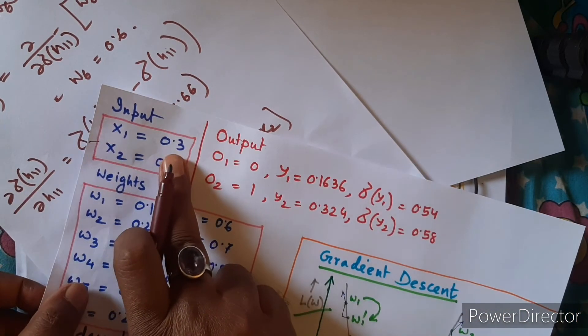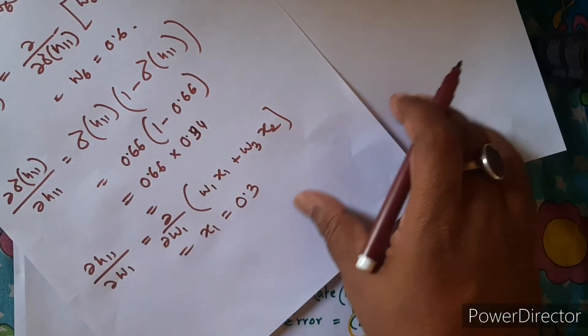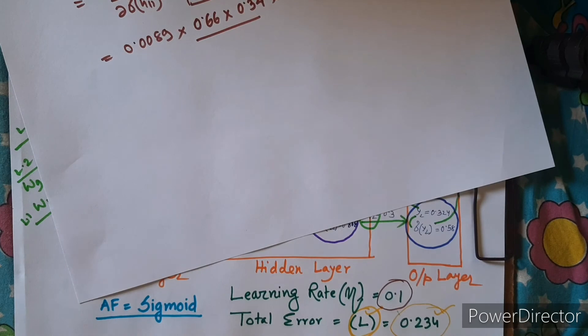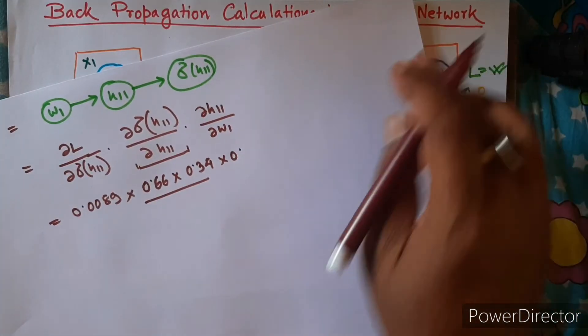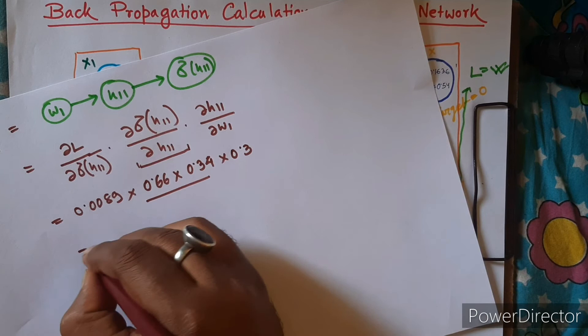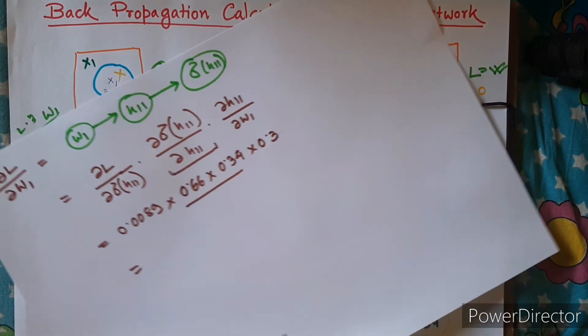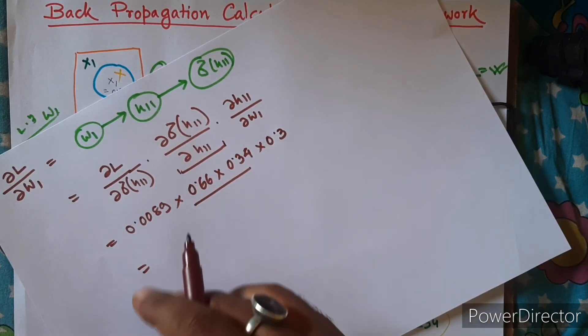So X1 is equal to 0.3, so just putting it here, it is 0.3. So calculating, it is...